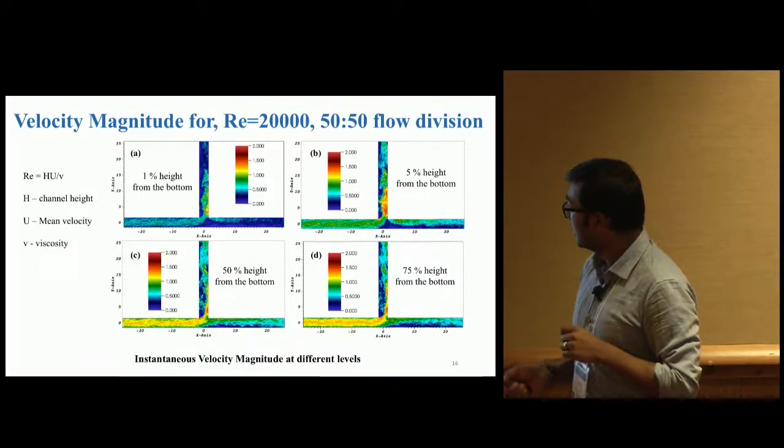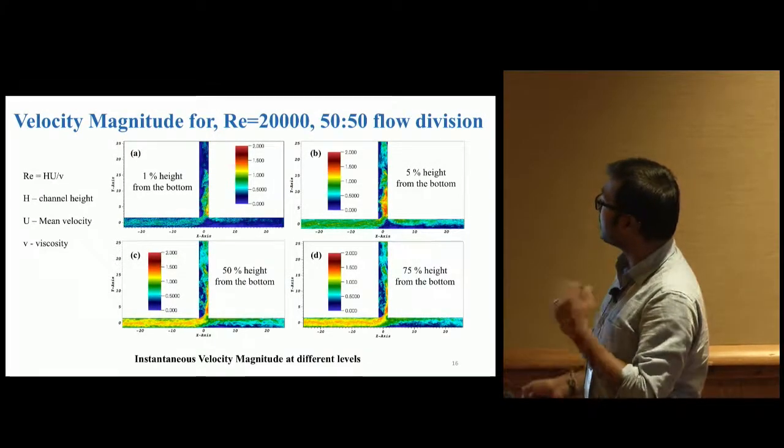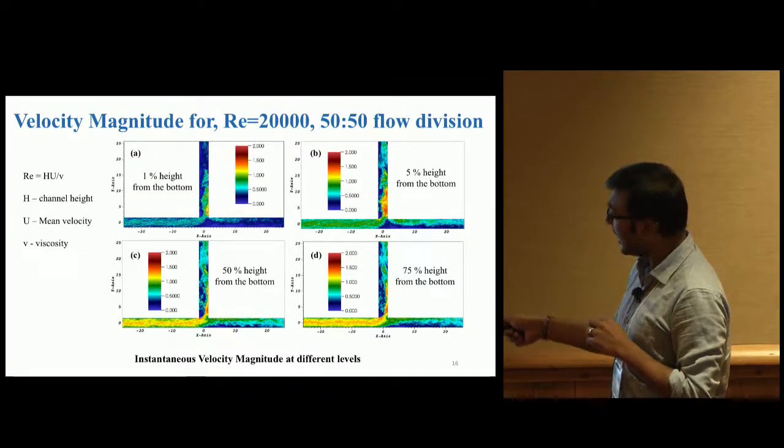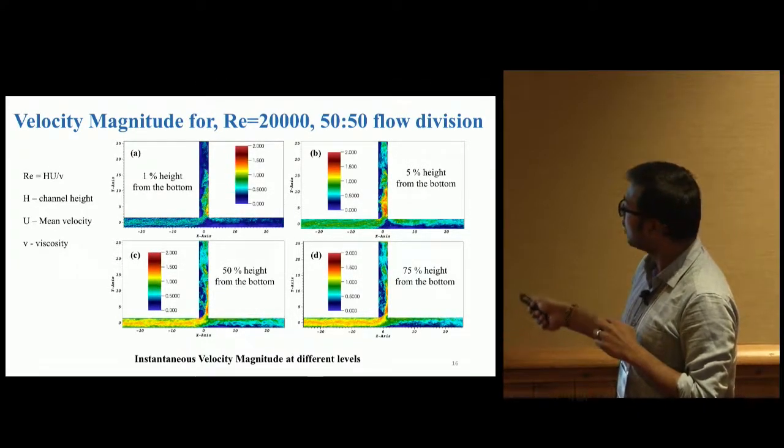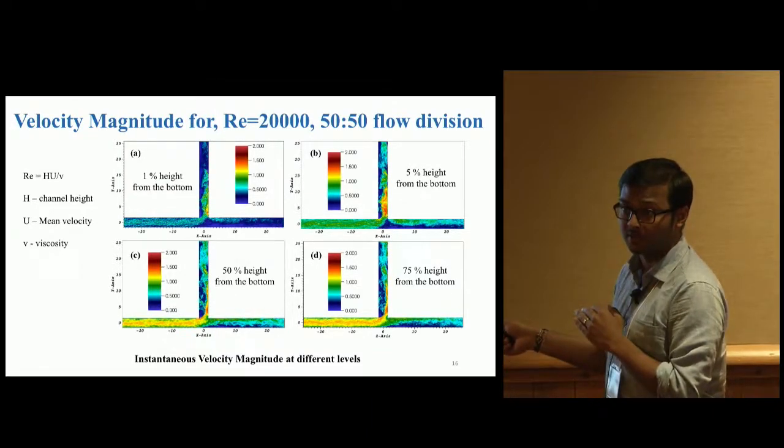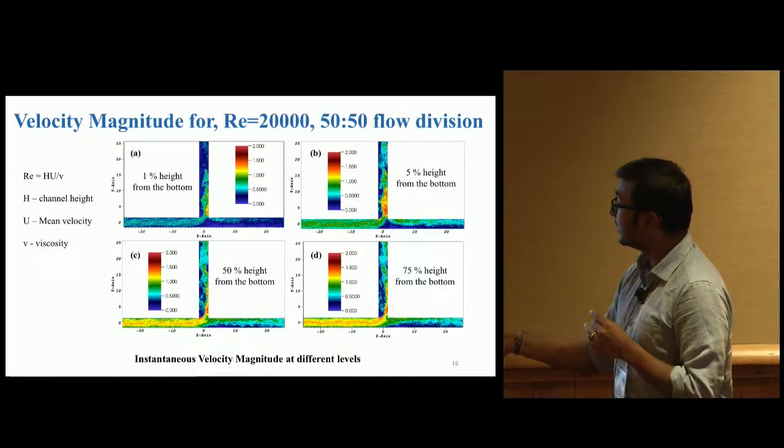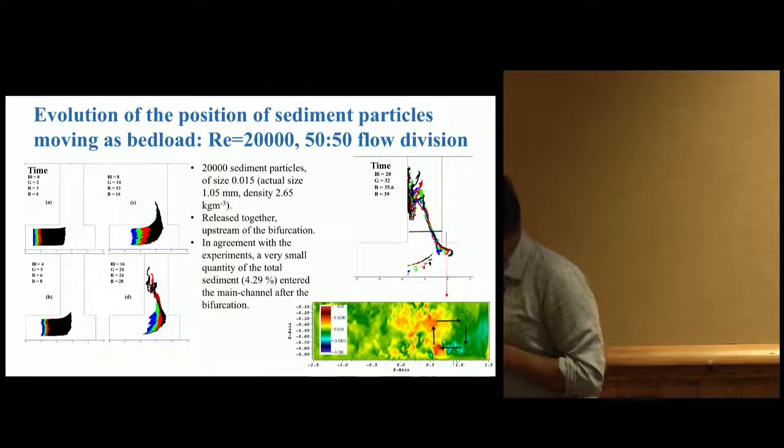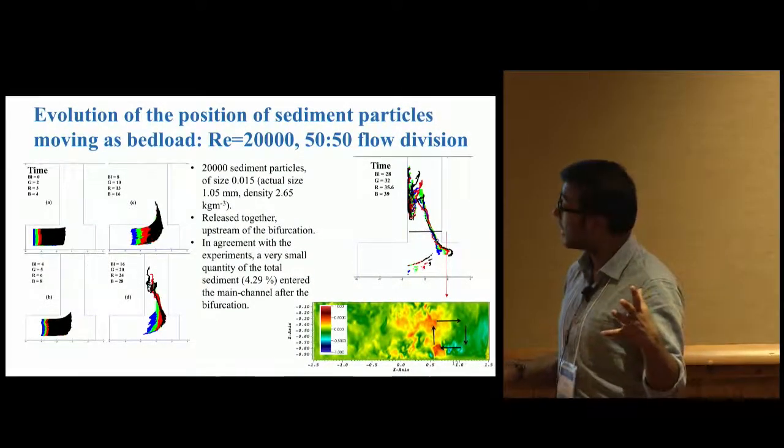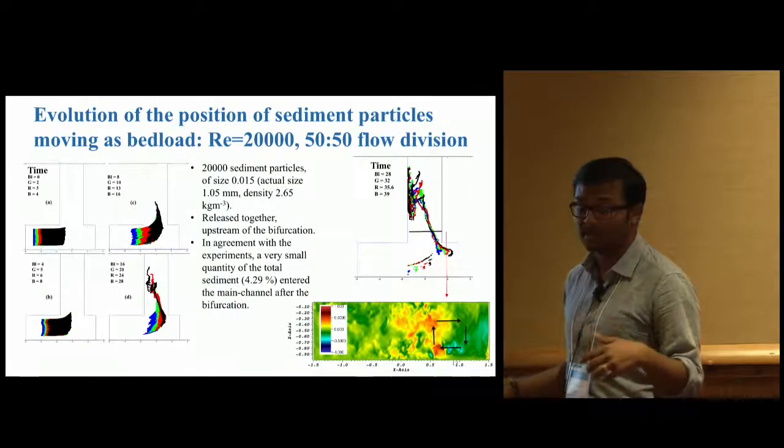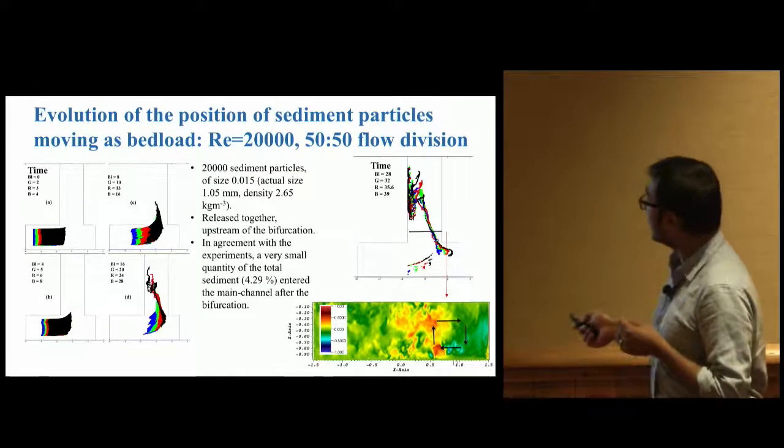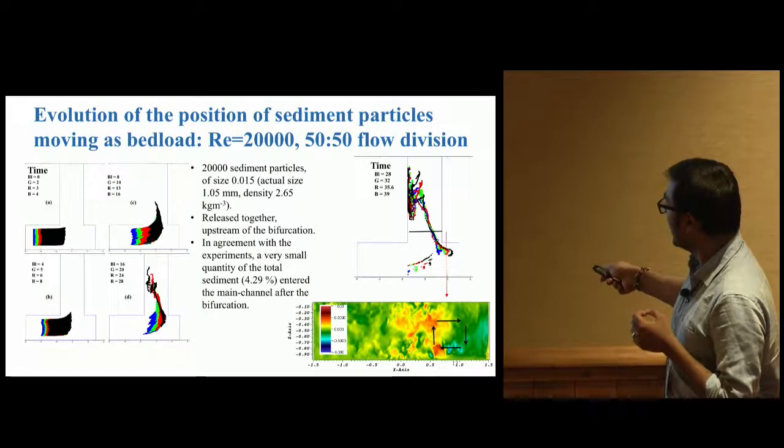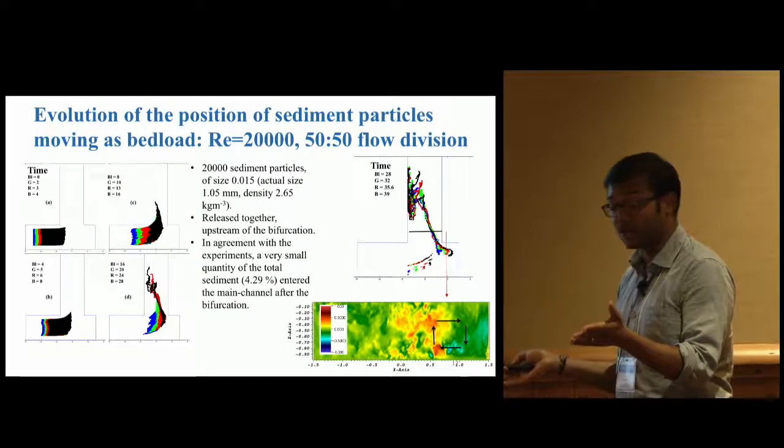What's causing the Bulle Effect? I've plotted velocity magnitude at four different heights from the bottom. At 1% and 5% height, almost all flow goes into the lateral channel. Even though total flow is split 50-50, most flow near the bottom goes into the lateral channel. We added Lagrangian particles traveling near the bed, and found almost 95% enter the lateral channel, only 5% continue into the main channel. This matches experiments well.